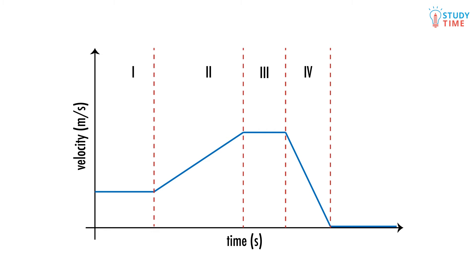Let's consider this graph here of Holly, a skier on Mount Ruapehu. You should first notice that it's velocity versus time. The slope of the line tells us the acceleration of the skier.